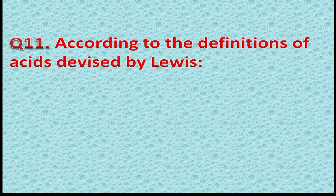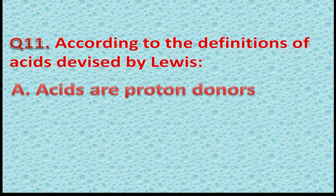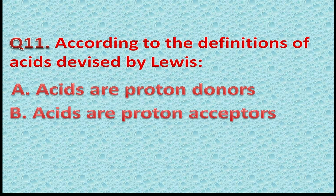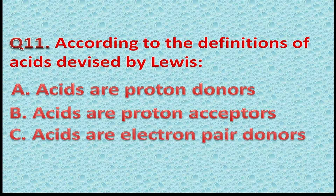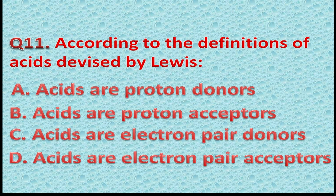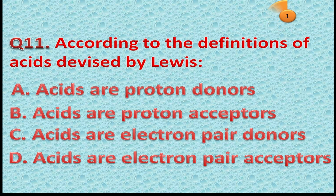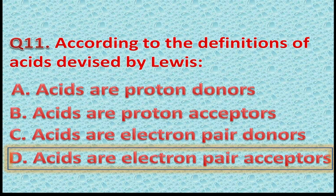Question 11: According to the definition of acids by Lewis — A: Acids are proton donors. B: Acids are proton acceptors. C: Acids are electron pair donors. D: Acids are electron pair acceptors. The correct answer is D — Acids are electron pair acceptors. You got one star if you chose this correct option.